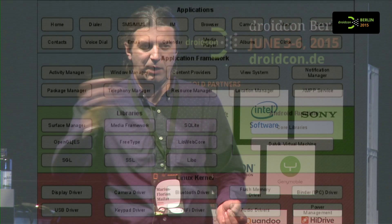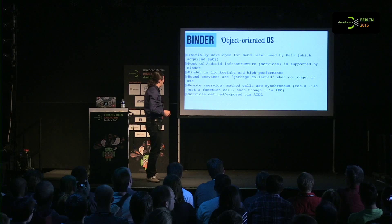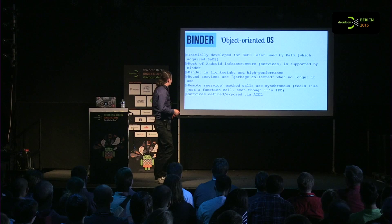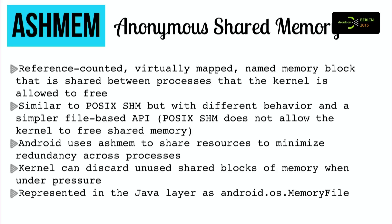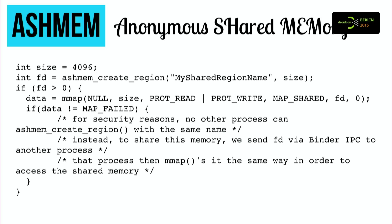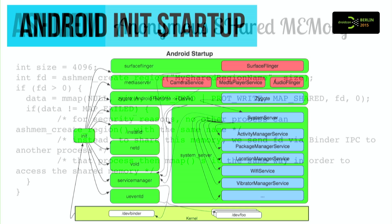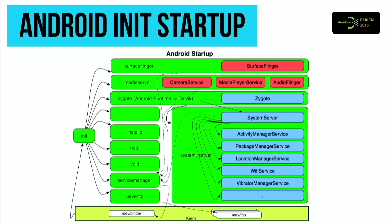Android is an object-oriented OS. Binder was initially not developed by Google — it was developed by Be OS, and a developer who was hired by Google brought the project in. About two years ago, Google completely rewrote the binder. In Android, we also have anonymous shared memory, where you can share a file descriptor to memory, and if you can catch that shared memory, you can also get some information. Another important point is the init startup. There is almost zero information from Google about how the platform works, how you can compile it, and how the whole platform starts.